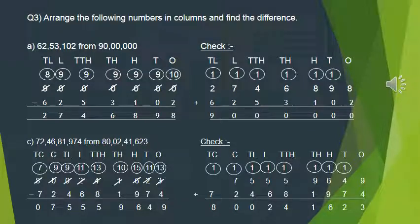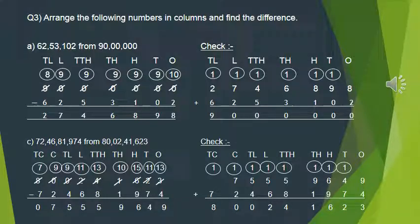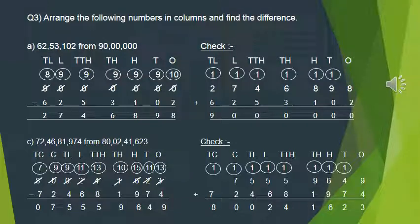Now we have to check. We write down the difference and the subtrahend and add them. The answer should be the minuend. If the answer is the minuend, that means you are getting the correct answer and have done the correct subtraction. Here I have written the difference first, then the subtrahend, added them, and the answer is the same — the minuend only — confirming the subtraction is correct.